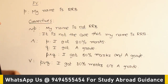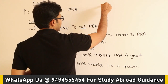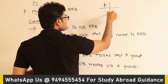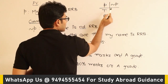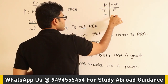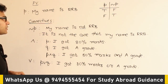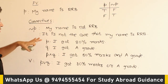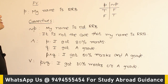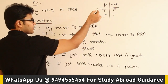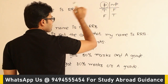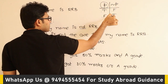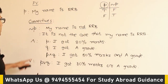For negation: if P has truth value true, then negation P is false, and if P is false, then negation P is true — the same as in digital logic. So if 'my name is RRB' is true, then 'my name is not RRB' is false. If 'my name is RRB' is false, then 'my name is not RRB' is true.